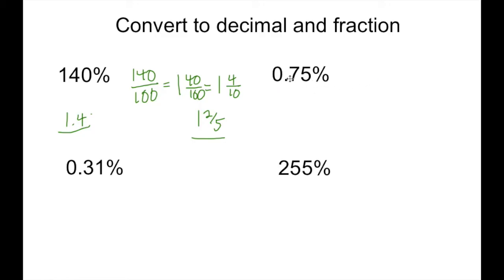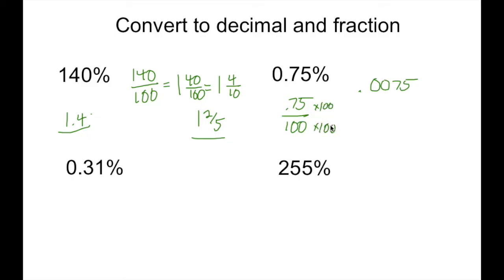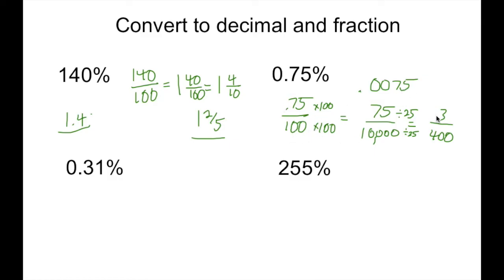For 0.75%, we'll do the decimal first — move it over two places, one, two — that gives us 0.0075. For the fraction, we put 0.75 over 100. We move the decimal over twice, so we multiply both by 100. That gives us 75 over 10,000. We can simplify by dividing by 25, which gives us 3 over 400. So there's our decimal of 0.0075 and our fraction of 3 four-hundredths.